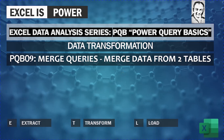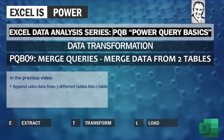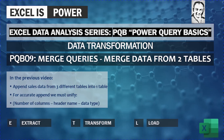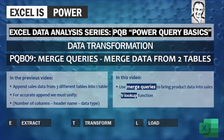In the previous video PQB08, we saw how to use append to bring sales data from three different tables into one table. For a proper append, we need to unify the number of columns, header names, and data types. In this video, we are going to use merge queries to bring product data into the sales table — similar to the VLOOKUP function — using a join kind called left outer.